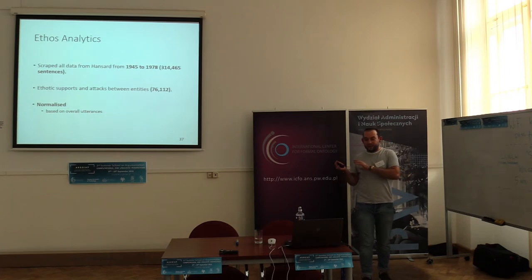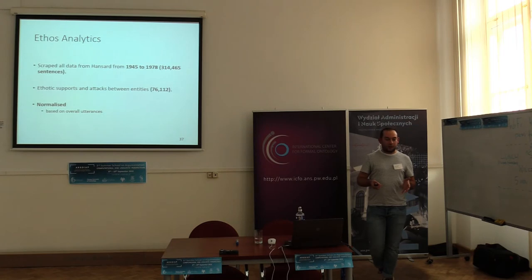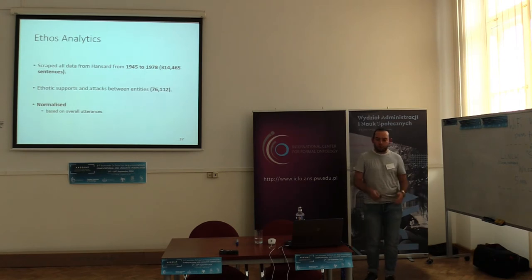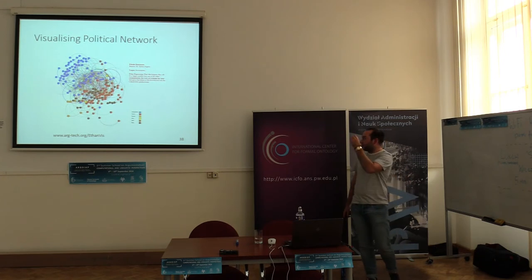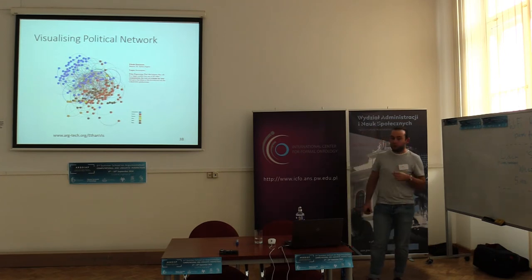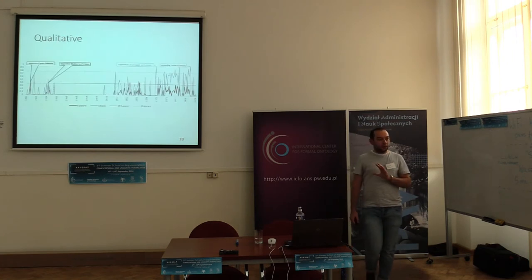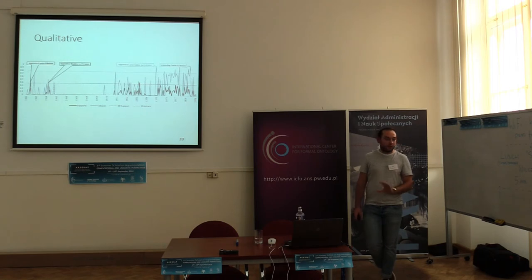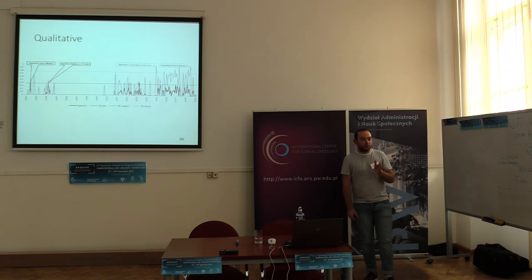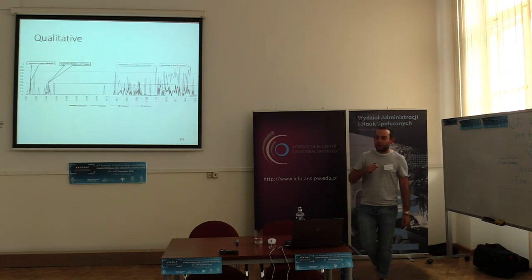We ran all data from 1945 to 1970 within the UK Parliament through the pipeline, extracted support and attack relations — around 6,000 in total — and then normalised them based on the total number of utterances for particular politicians or political parties. The first visualisation looks at relationships between politicians as nodes, showing whether attack or support relations predominate. The next step is qualitative analytics: looking at individual politicians, mapping supports and attacks on their ethos, normalising for the number of utterances, and looking at standard deviation to find spikes. For Margaret Thatcher, whenever her support spiked above the standard deviation, she tended to be appointed to a new position within her political career.